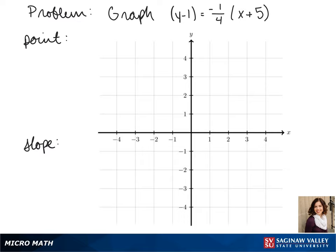So first we'll solve for our point. This is our point slope form. Remember that since it's minus y1 and minus x1, when we plug those in we have to flip the sign, so we get negative 5, 1 as our point.